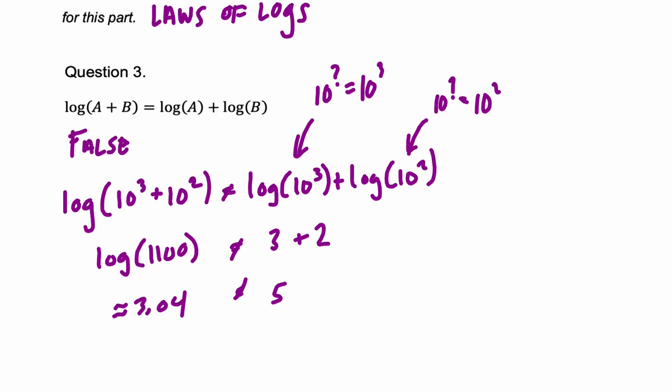So just to clarify what does work, the actual correct law, the true law, would be when you have the log of A times B, not A plus B. The log of A times B does equal the log of A plus the log of B. And I'm writing this law using the common base, the common logarithm of 10, but it works for any base. Hope that helped.